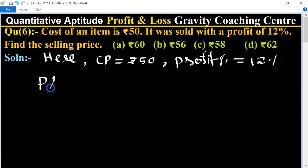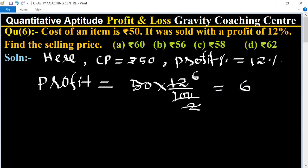So first of all we will find the profit. Profit equal to 12% of 50, so 50 multiplied by 12%, so 50 by 100 and 6 by 12, equal to rupees 6 is the profit.